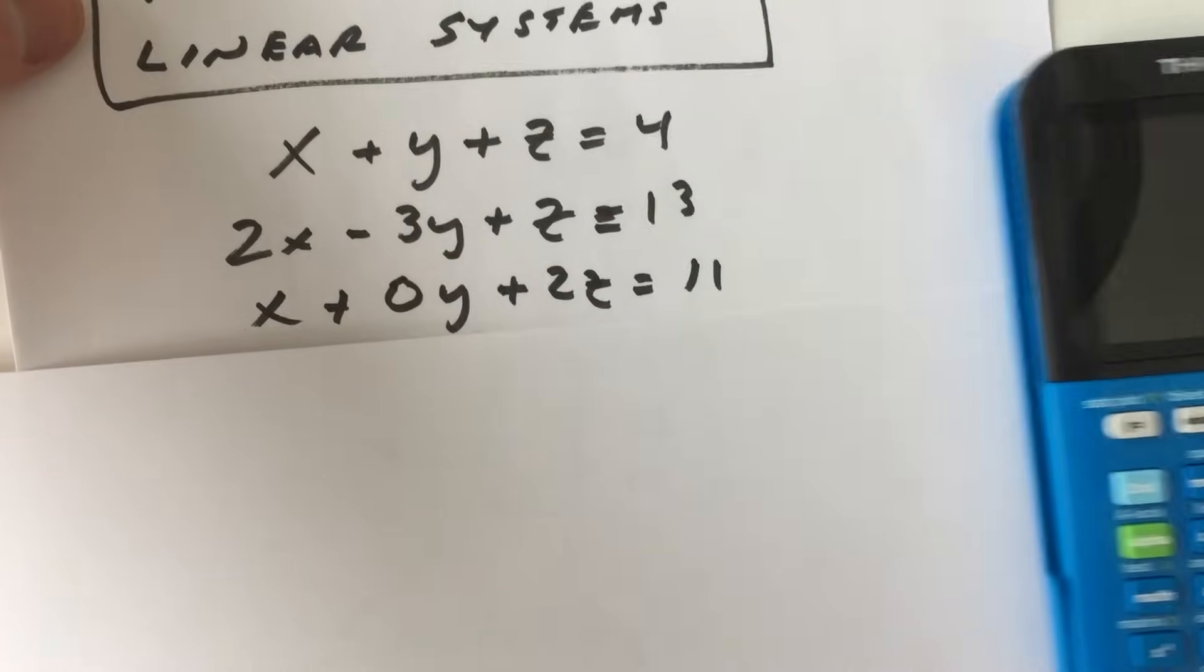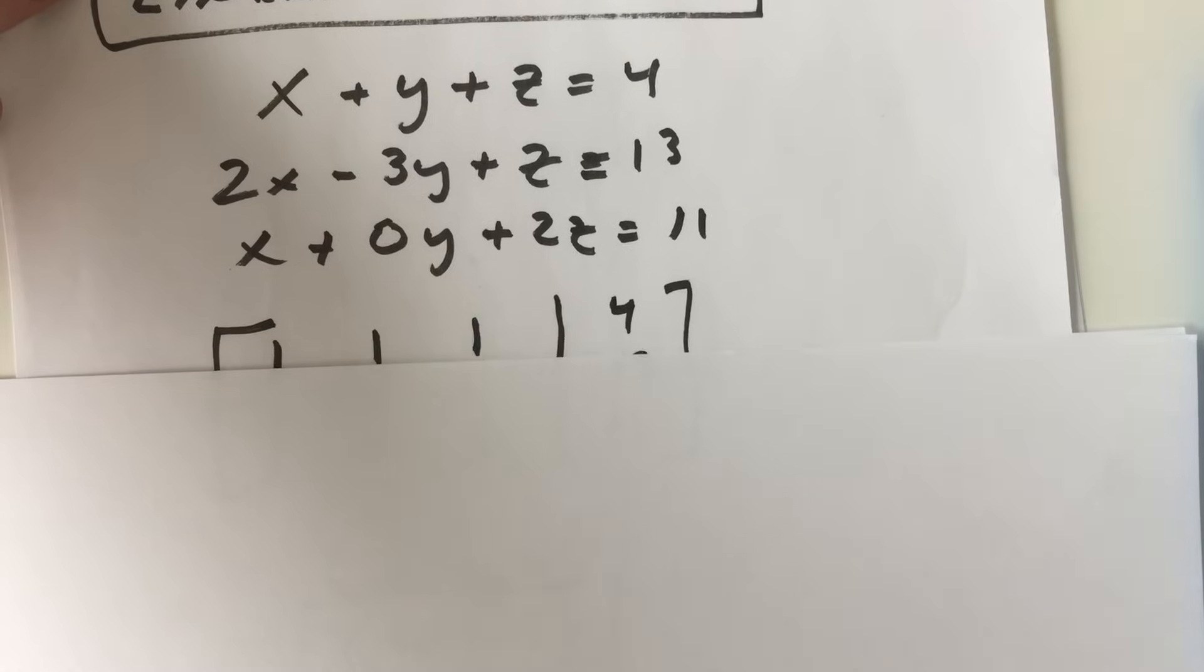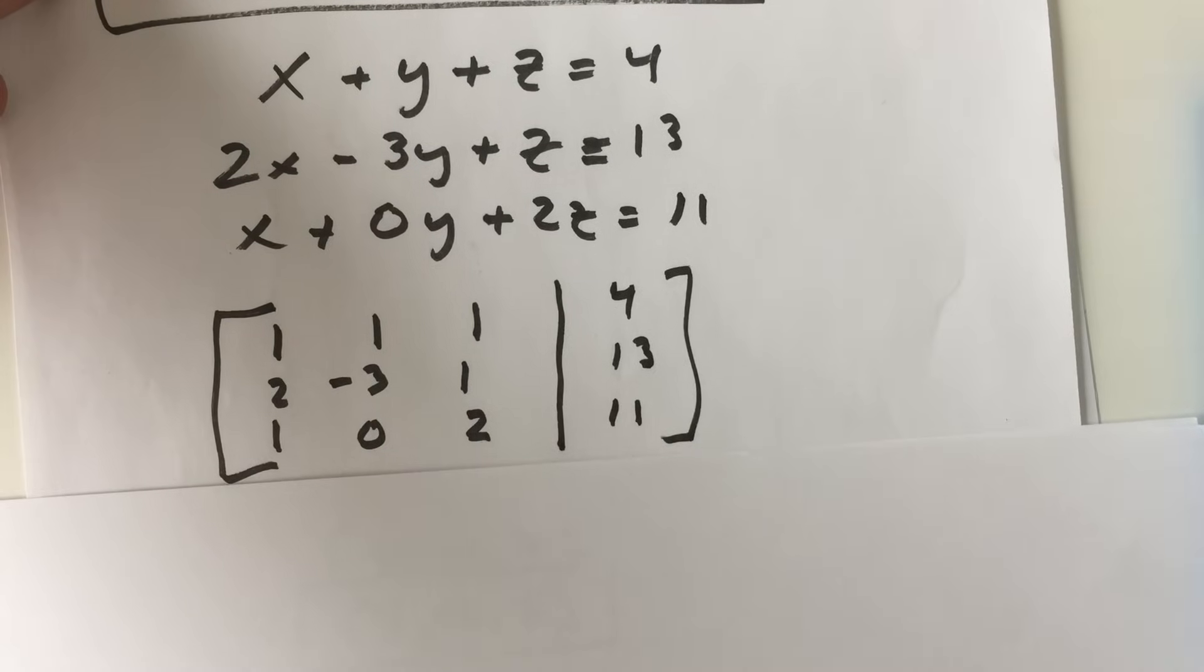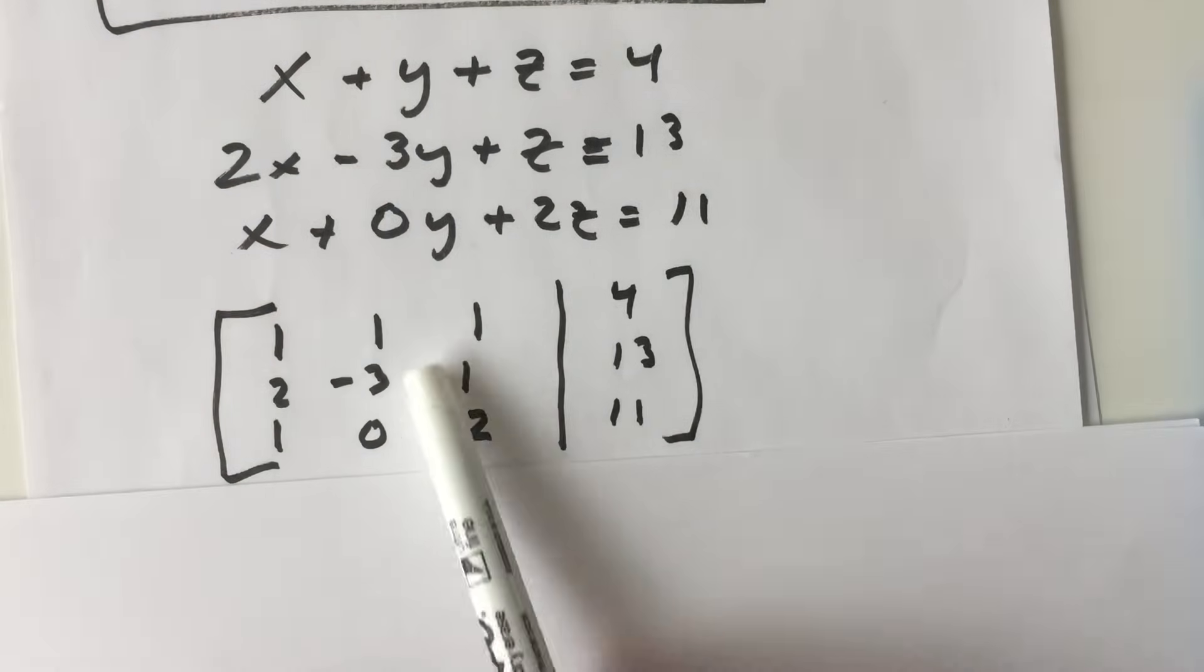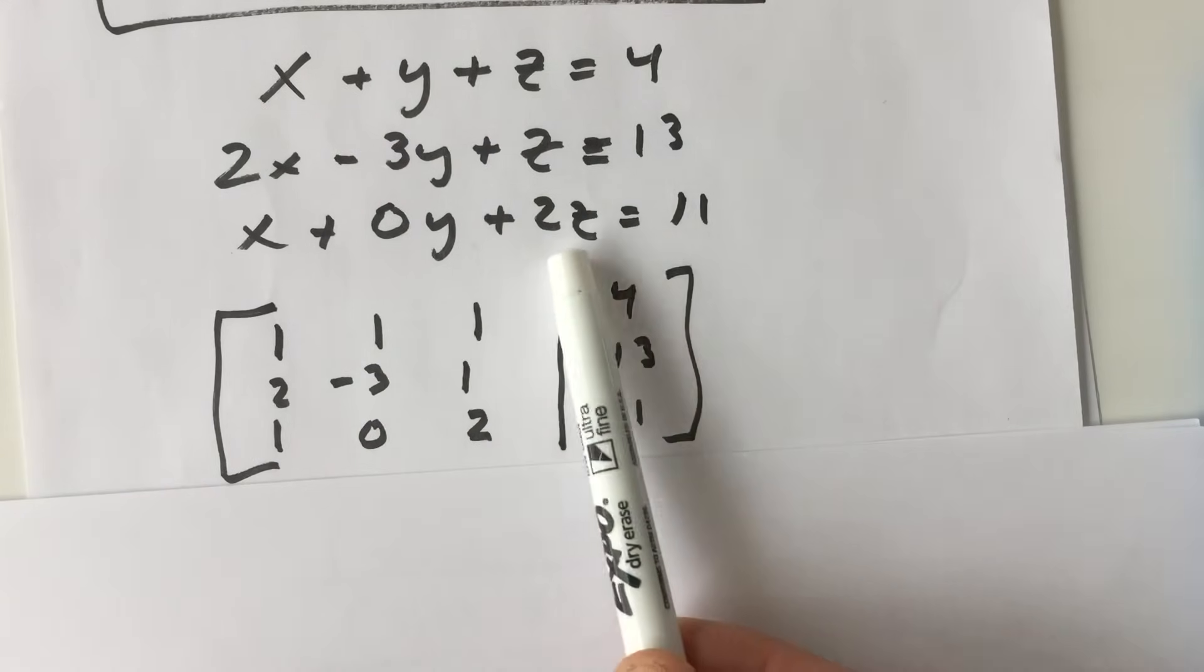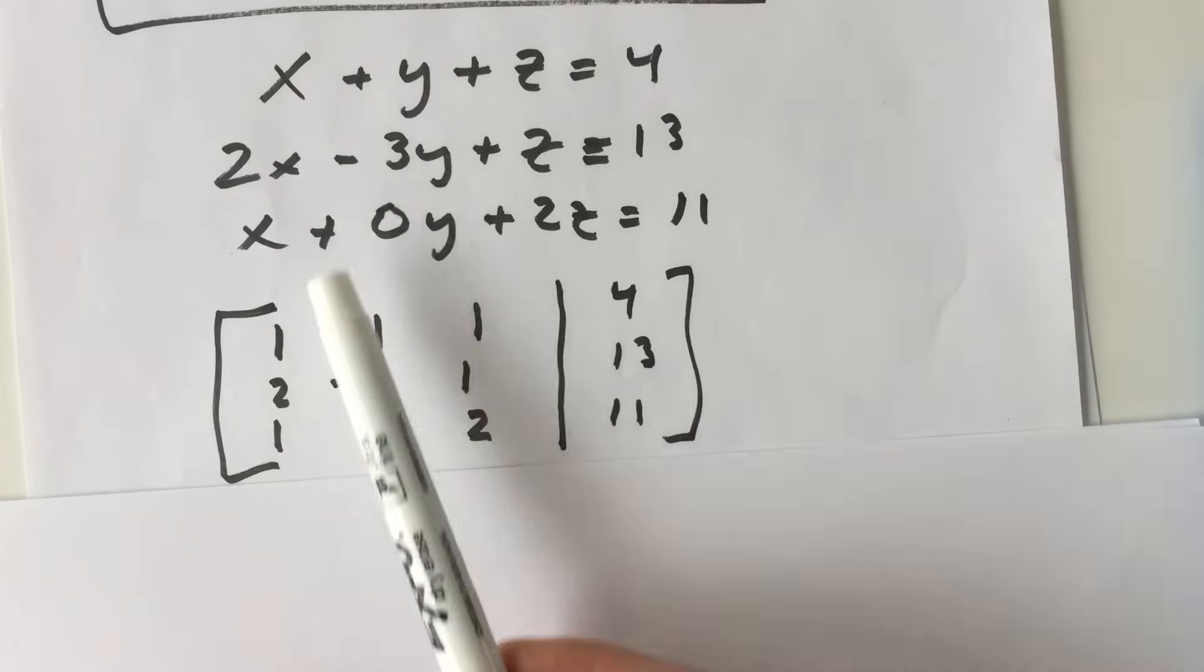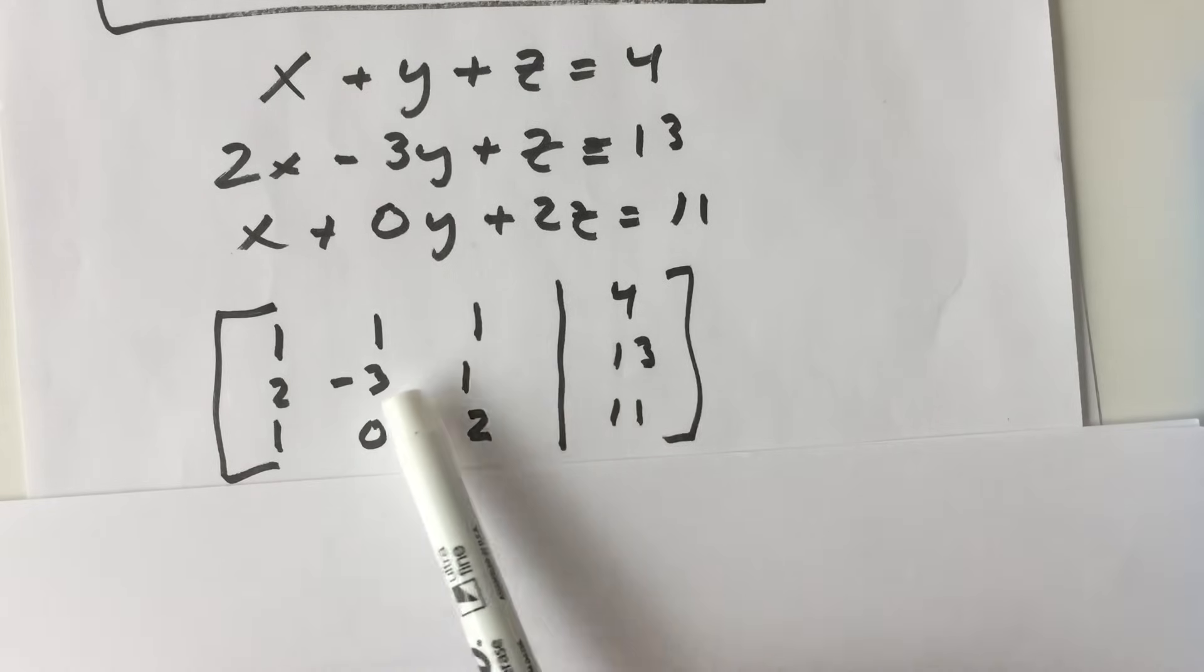So what an augmented matrix is, is you want to use the coefficients, the numbers in front of the variables, and you want to write it like this. So you can see we've got 1x plus 1y plus 1z equals 4. So see 1, 1, 1. And I've just drawn a line here. This is the augmented matrix portion. You have your solutions on the right. Same thing here, 2x, I've got 2, negative 3y, negative 3, and so on.